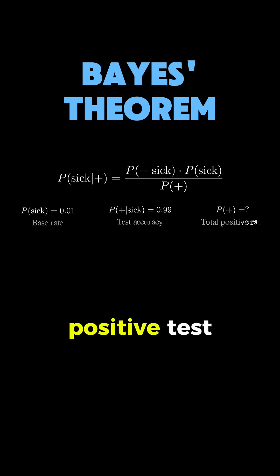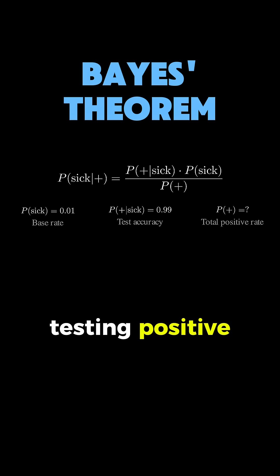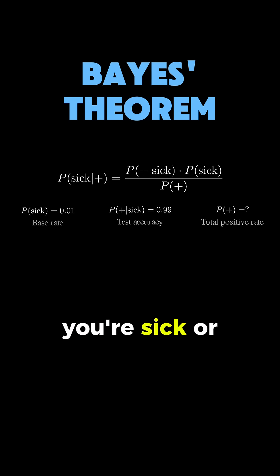Then we have P(+), the evidence, which is the total probability of testing positive regardless of whether you're sick or healthy.